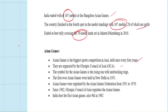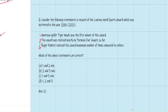The first Asian Games was held in New Delhi in 1951. After most Asian countries got independence from European colonizers in the 1950s, the Asian Games were established to build collaborative and friendly relationships. The games are held every four years. India has hosted the Asian Games twice — the first Asian Games in 1951 and the ninth Asian Games in 1982.